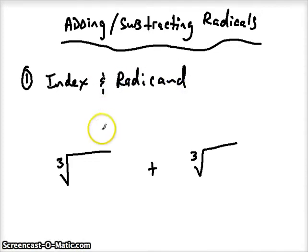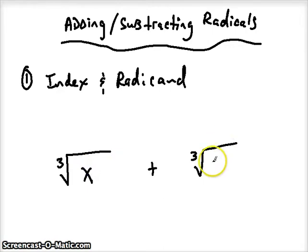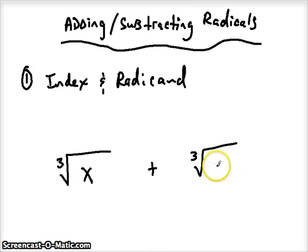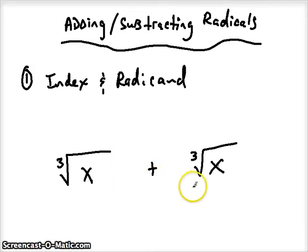The index and something else has to be true: the radicand. The radicand is the number that's underneath the radical. So if I had x and I had 8, because the number underneath the radical sign — the radicand — is not the same, I could not add these together even though my index was the same. Both conditions have to be true.